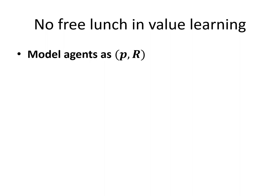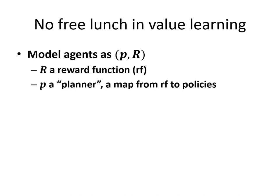How does this work? I'm going to model an agent as a pair: P, a planner, and R, a reward function. A planner models rationality, bias, or all ways of acting in the most general form possible. So the planner is a map from reward functions to policies. For instance, the fully rational planner is one such map. Satisficing is another such map, and so on.